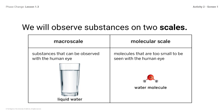Molecules are very tiny units of matter that we cannot see with the naked eye. The term naked eye refers to our ability to observe substances without the help of instruments. In contrast, we need tools such as microscopes to help us see molecules.